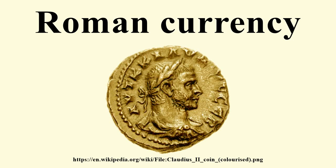Roman currency for most of Roman history consisted of gold, silver, bronze, platinum and copper coinage. From its introduction to the Republic during the 3rd century BC, well into imperial times, Roman currency saw many changes in form, denomination, and composition. A persistent feature was the inflationary debasement and replacement of coins over the centuries. Notable examples of this followed the reforms of Diocletian. This trend continued into Byzantine times.